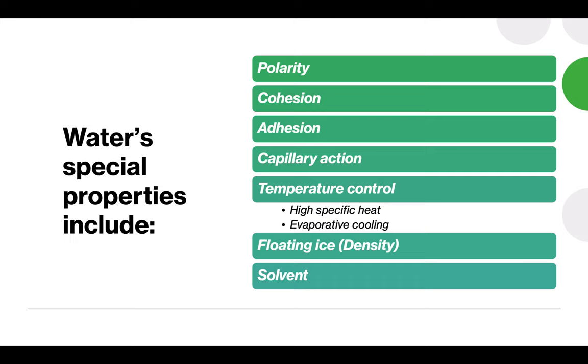And then the rest of these properties are all subsequent to that polarity. They're all caused by the polarity of the water molecule. So we have cohesion, adhesion, capillary action, which is really just kind of a combo of those two. Water's role in temperature control in ecosystems and within biological organisms. Its density, which is different between solid and liquid. It's a little different mix than most substances and its role as a solvent. So quick review.